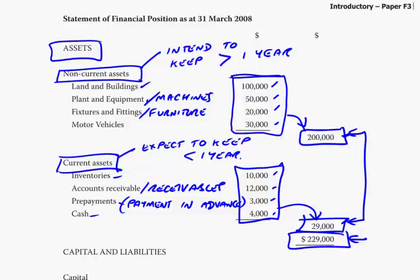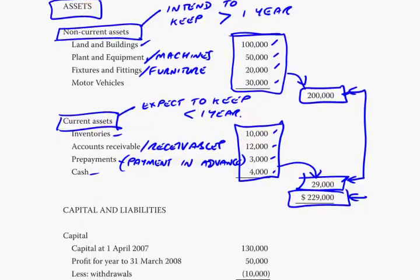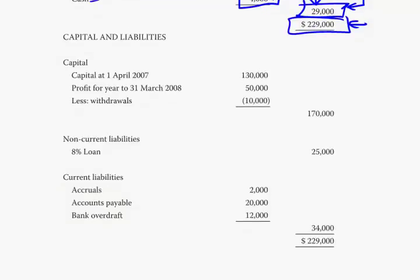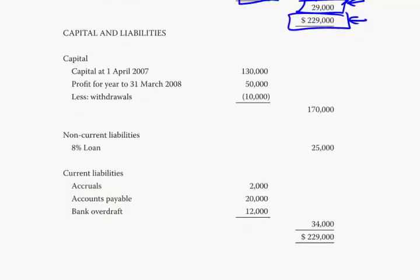Those are the total assets — they must equal the amount the business owes. The amount the business owes: thinking back to our example, we had capital owed to the owner and liabilities owed to other people. Capital, exactly as we had — this is a sole trader. There's what we started with: in this example, 130,000. It goes up because of the profit we've made, and it reduces by any withdrawals — anything the owner has taken out — which leaves us with 170. So that's the capital.